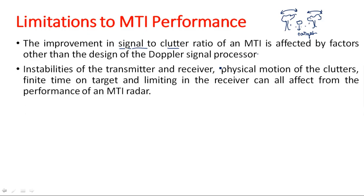The different factors that affect MTI radar performance are: instabilities in the transmitter and receiver, physical motion of the clutters — the tree is not supposed to move unless there is wind, so while we assume it is a stationary target, other factors prevent us from treating it as perfectly stationary — finite time on the target, and limiting in the receiver. All of these can degrade the performance of the MTI radar.